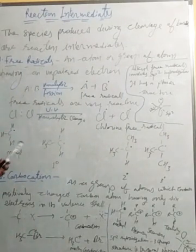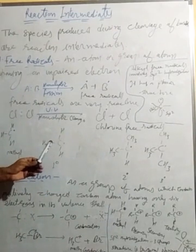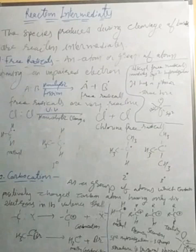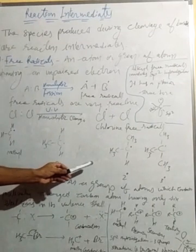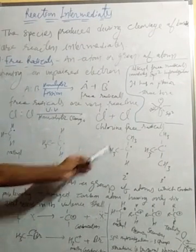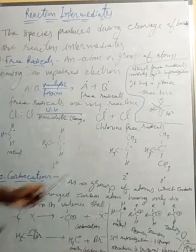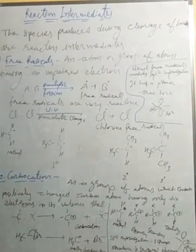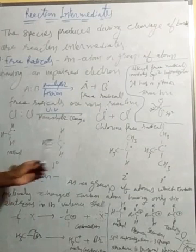Free radicals are of different types. If a methyl radical has one alkyl group, it is called a primary free radical. If methyl has two alkyl groups, it is called a secondary free radical. If methyl has three alkyl groups, it is called a tertiary free radical.